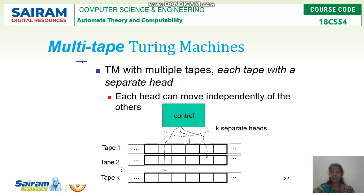A multi-track Turing machine will have a single tape, but this tape will be divided into n number of tracks. Since there is only one tape, there will be only one read-write head, and this read-write head can read from all the tracks at a time — it can read symbols from all the tracks simultaneously.